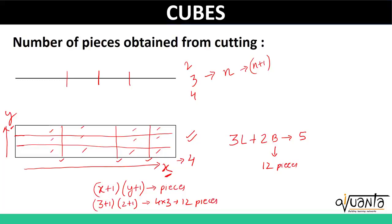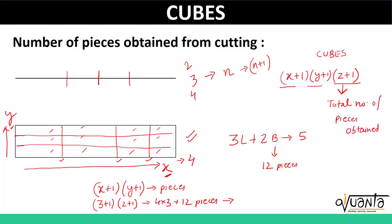Now we can easily extend this result into cubes, because in cubes we just have one more dimension, which is the height. So in a cube, if we are making x cuts along the length, y cuts along the breadth, and z cuts along the height, then the total number of pieces obtained would be (x+1) × (y+1) × (z+1). This is a very important result that you have to remember.